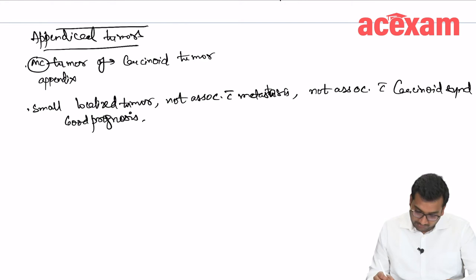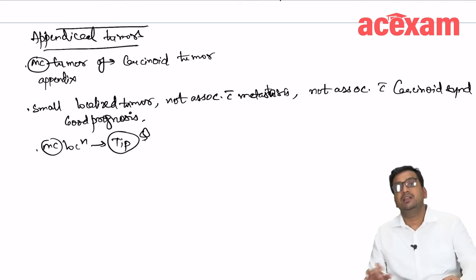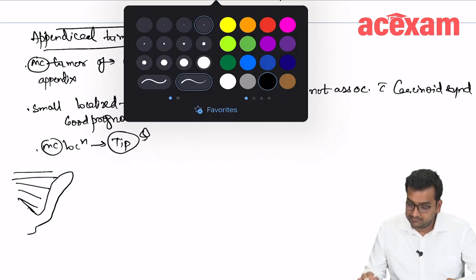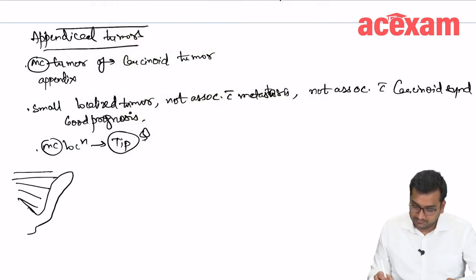Most common location is tip of appendix. If there is appendix, this is appendix. If there is a tumor, this is the base of appendix, this is the mesoappendix. If there is a tumor here or if there is a tumor here, what will be the treatment?